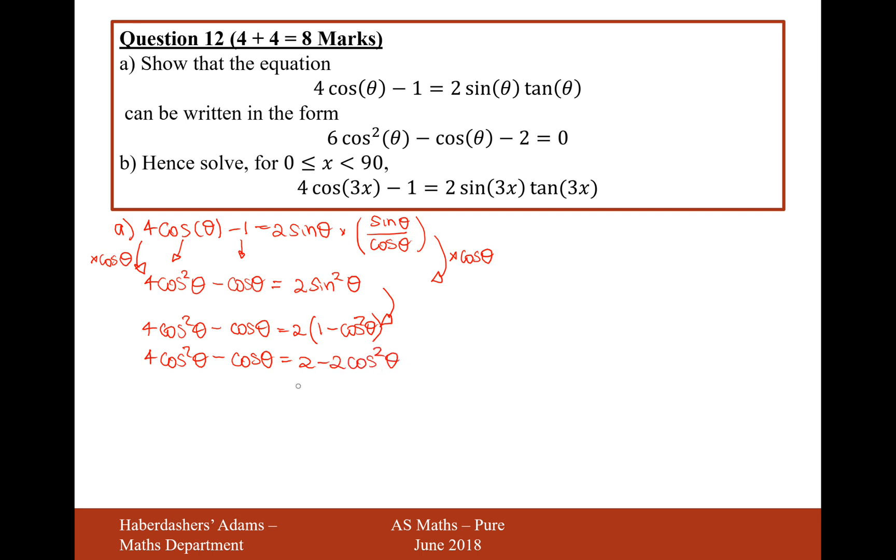Now I'm going to add the 2 cos² θ onto the other side, and I'm going to subtract 2. So add 2 cos² θ and subtract 2 to both sides. So that's going to give us 6 cos² θ minus cos θ minus 2 equals 0.